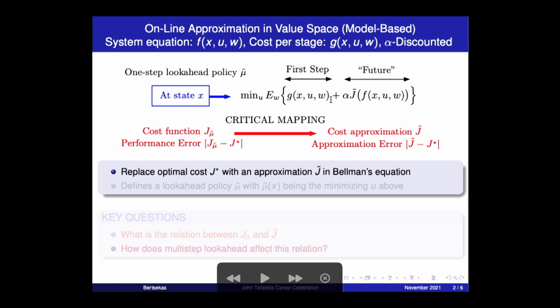And there's a critical mapping involved here. How does your approximation J tilde affect the end result, which is the policy that you get? That's the question you're interested in. How does all the stuff that you approximate affect the quality of the policy that you obtain? So the critical mapping is the one that maps approximation error, J tilde from J star to performance error, the cost of this policy mu tilde, which I call J mu tilde, minus J star. That's the core question.